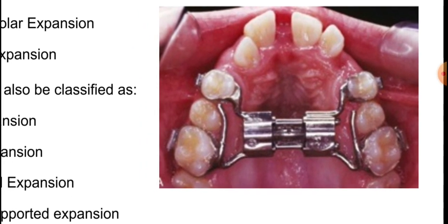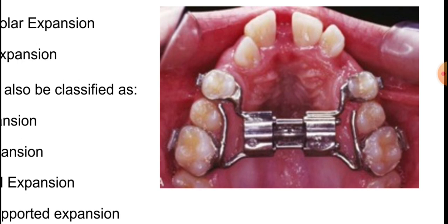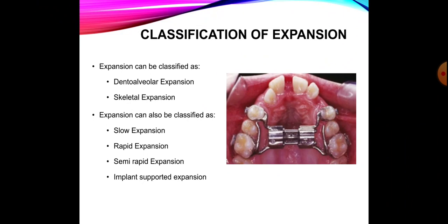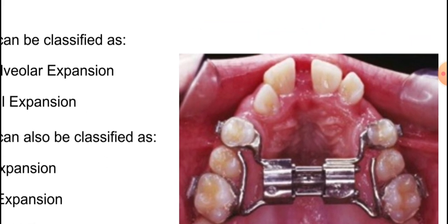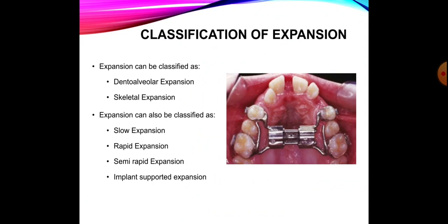We classify expansion as dental alveolar and skeletal expansion. In dental alveolar expansion, when we open the expander, the force is transmitted to the teeth and the teeth move within their dental alveolar housing — this transverse movement is termed dental alveolar expansion. Expansion that happens across the mid-palatal suture at the skeletal basis comes under the category of skeletal expansion.